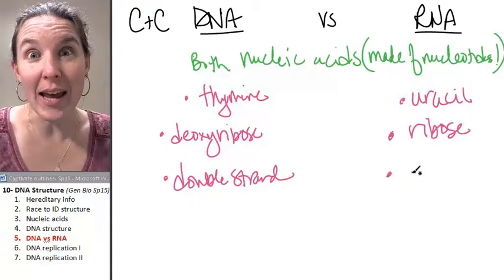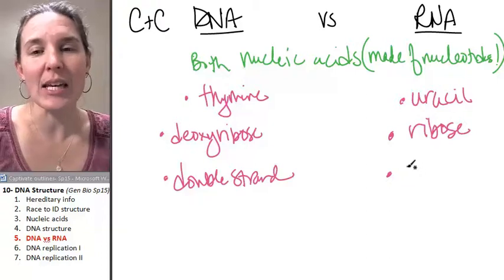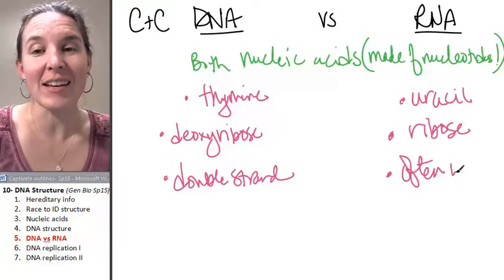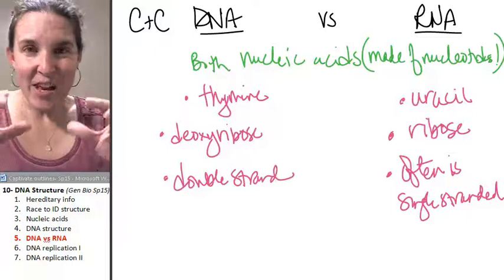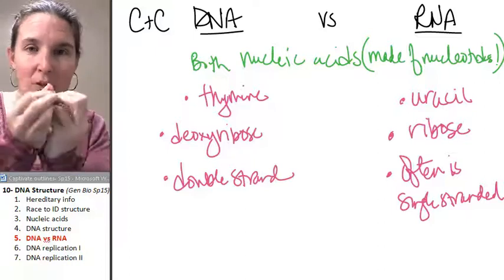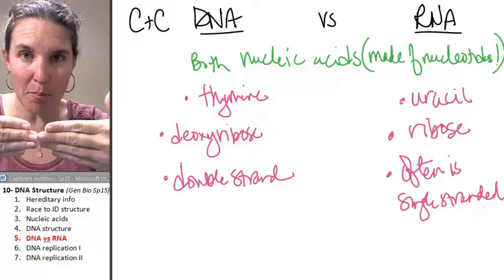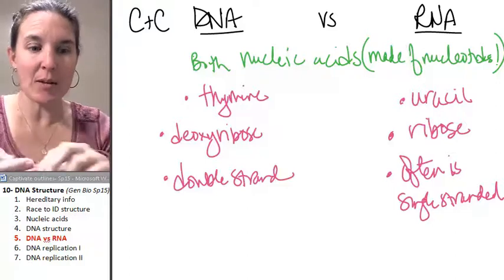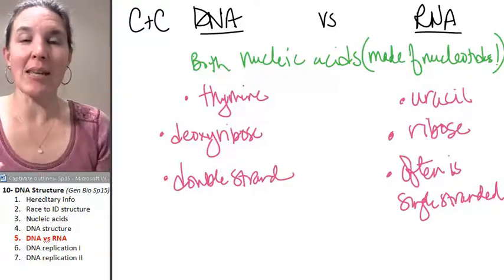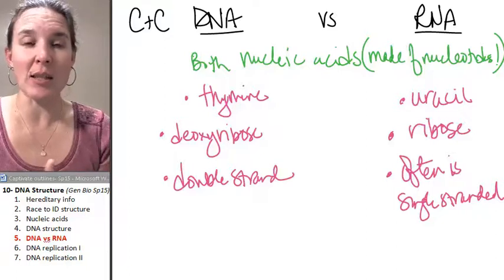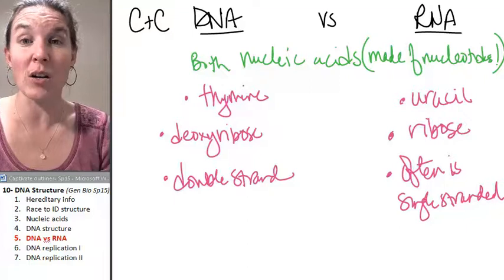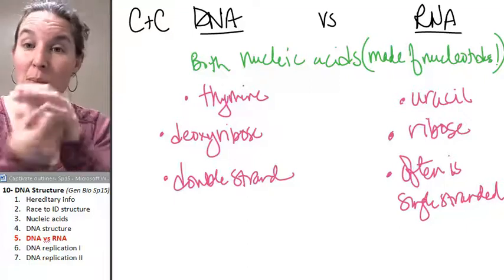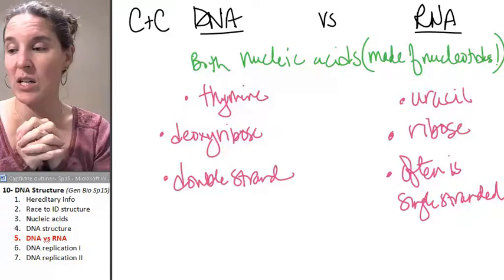RNA, on the other hand, is often single-stranded. But it can fold on itself and form double-stranded parts to make different shapes. We'll see this when we look at protein synthesis and translation — molecules of RNA called tRNA actually bend in on each other and form unique shapes.